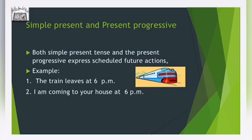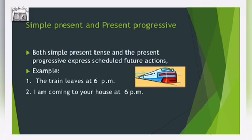Simple present and present progressive can both express scheduled future actions. For example: The train leaves at 6 pm — simple present. I am coming to your house at 6 pm — present progressive. These are scheduled actions planned in advance, like a timetable. The train leaves at 6 pm means the departure is set.